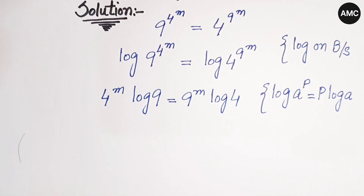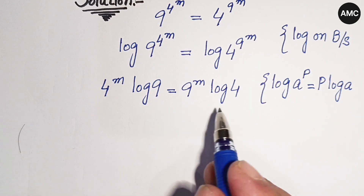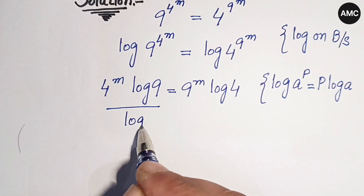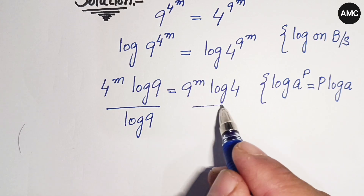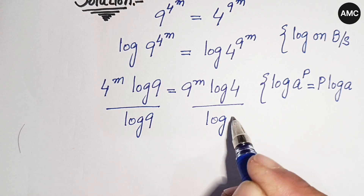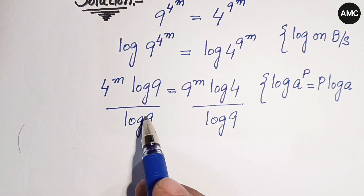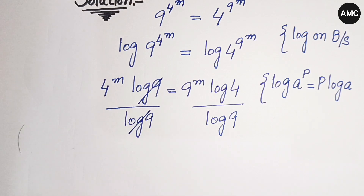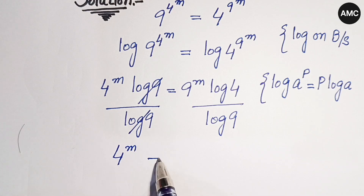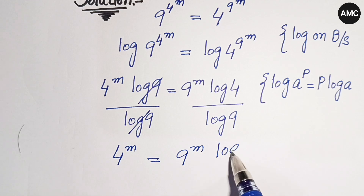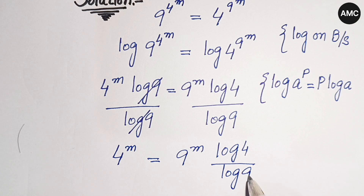Now if we divide log 9 on both sides, on the left hand side this log 9 is cancelled out with log 9. So we get 4 to the power m is equal to 9 to the power m times log 4 divided by log 9.